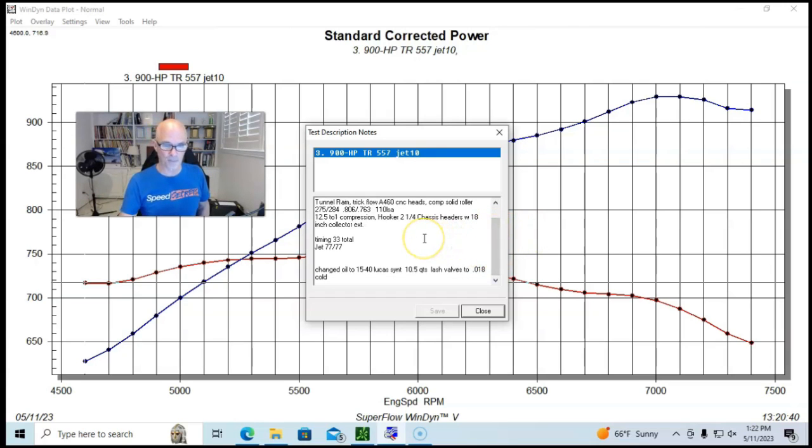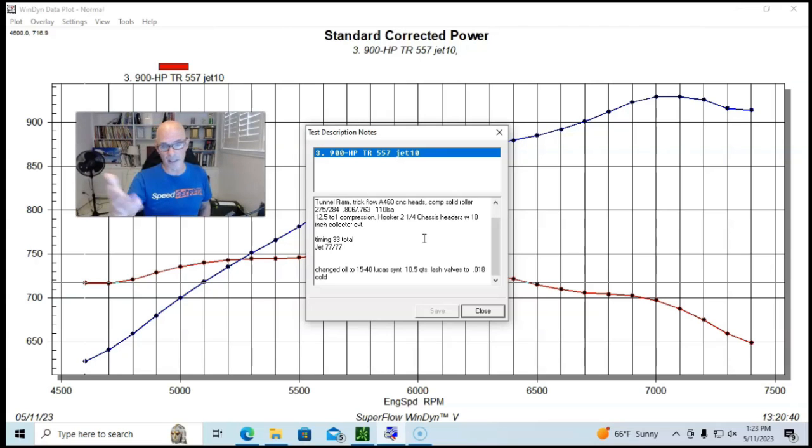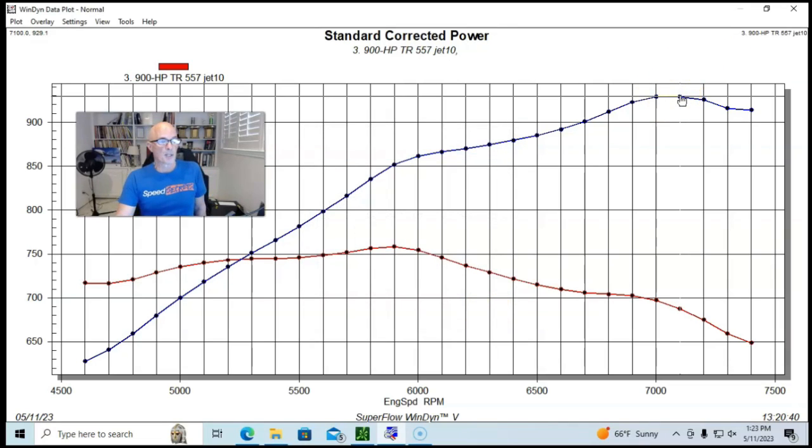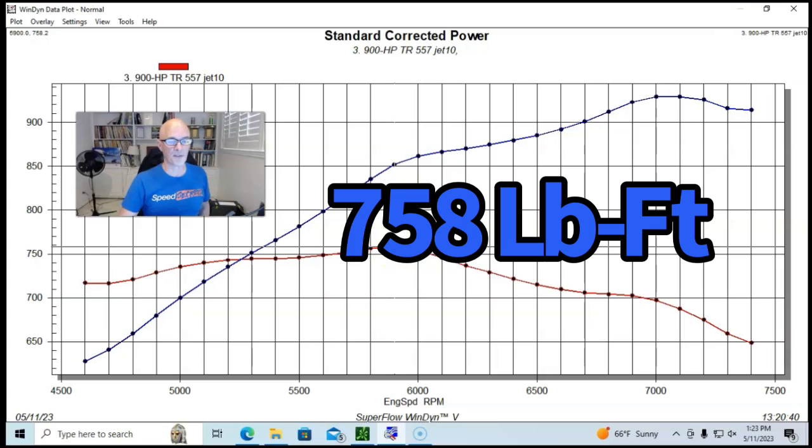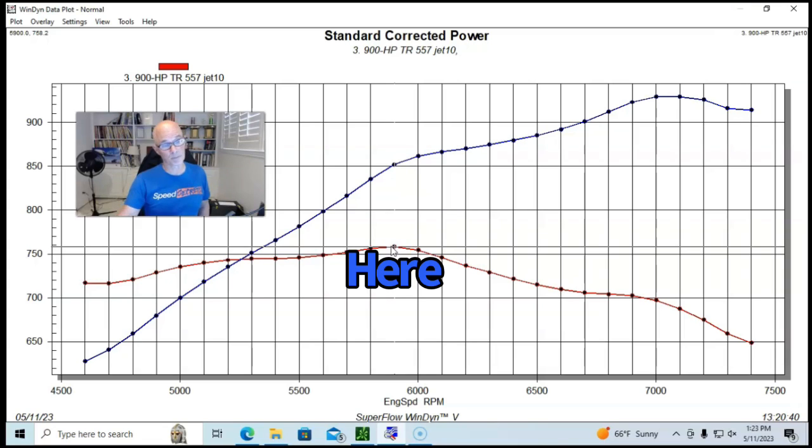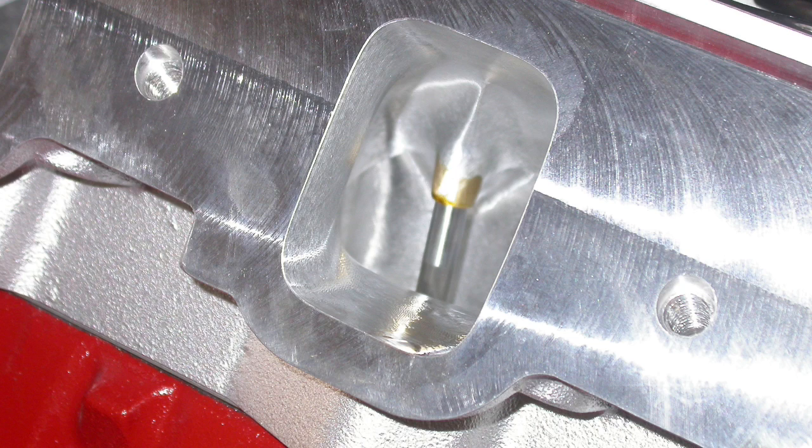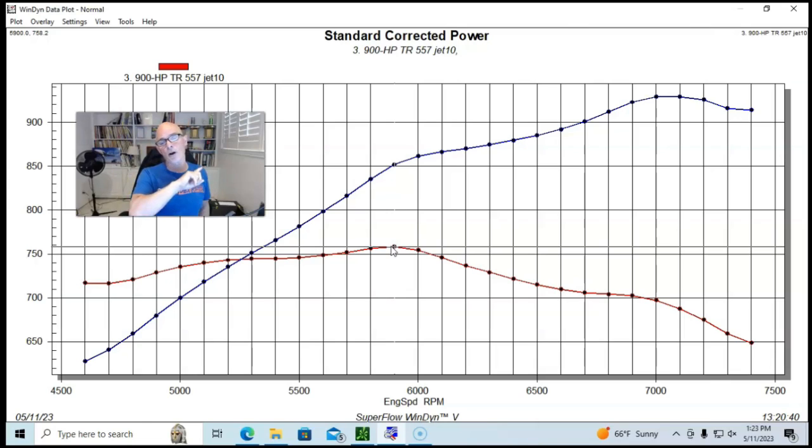And all of that stuff allowed us to produce a good bit of power with this thing. It made very good power. We also had a good oiling system on this. We used 1540 Lucas. We set our lash at 18,000s cold. This thing ran best at 33 degrees of timing. We had 77 jets in it for guys that are thinking about duplicating this. Run in this manner, our 900 horsepower combination did exceed 900 horsepower, 929 horsepower at 7,100 RPM and peak torque checked in at 758 foot pounds at 5,900 RPM.